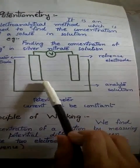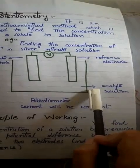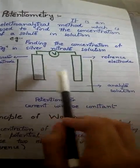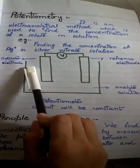This is a very rough sketch of a potentiometer. This is the cell containing analyte solution and these are two electrodes. One is reference electrode and the other one is indicator electrode.